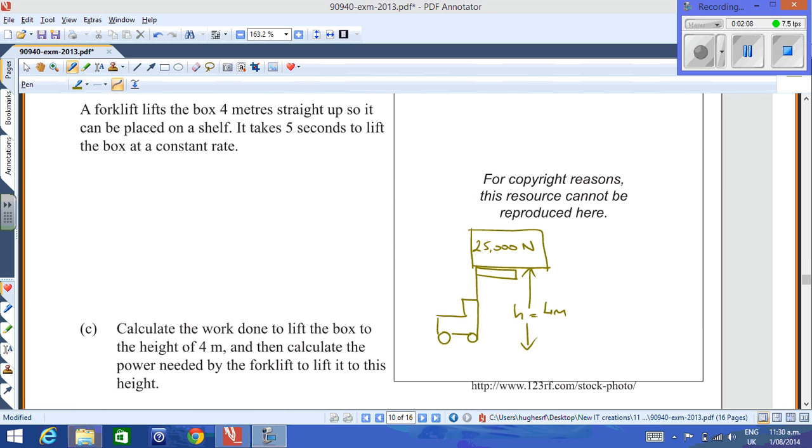Now the next part of the question goes on to talk about a forklift lifting this box. A forklift lifts the box four meters straight up so it can be placed on a shelf, and it takes five seconds to lift the box at a constant rate. Here's your forklift and it's lifting the 25,000 Newton box to a height of four meters and that takes five seconds. Part C, calculate the work done to lift the box to the height of four meters and then calculate the power needed by the forklift to lift it to this height.